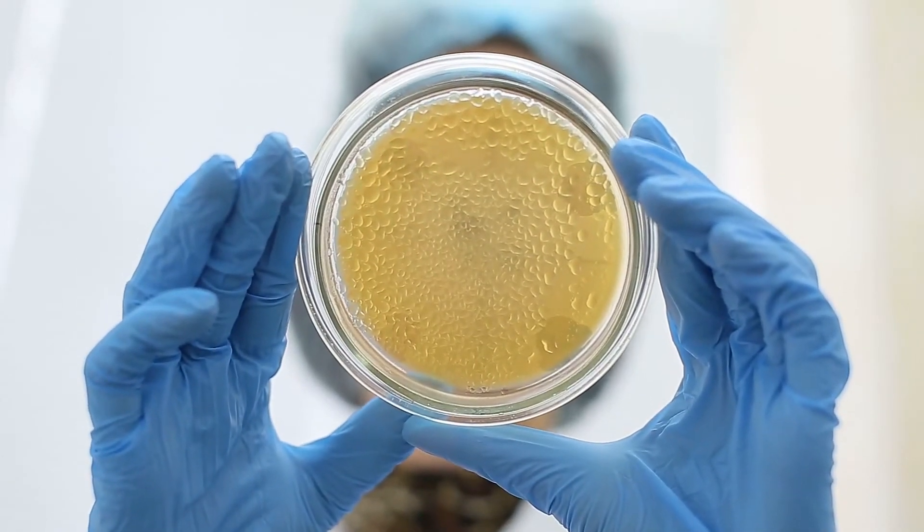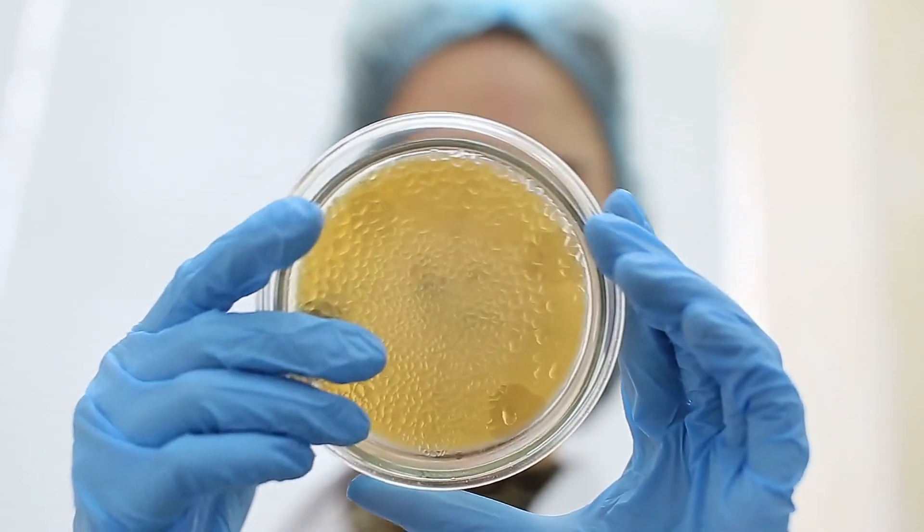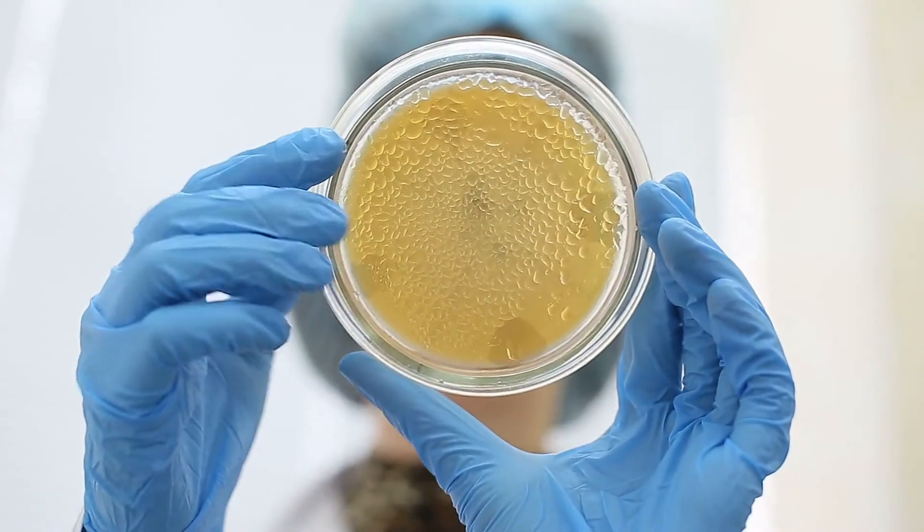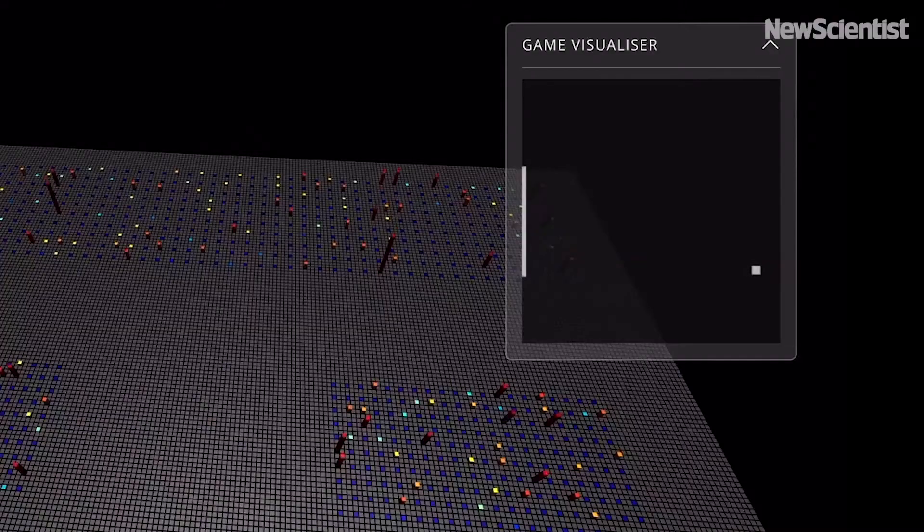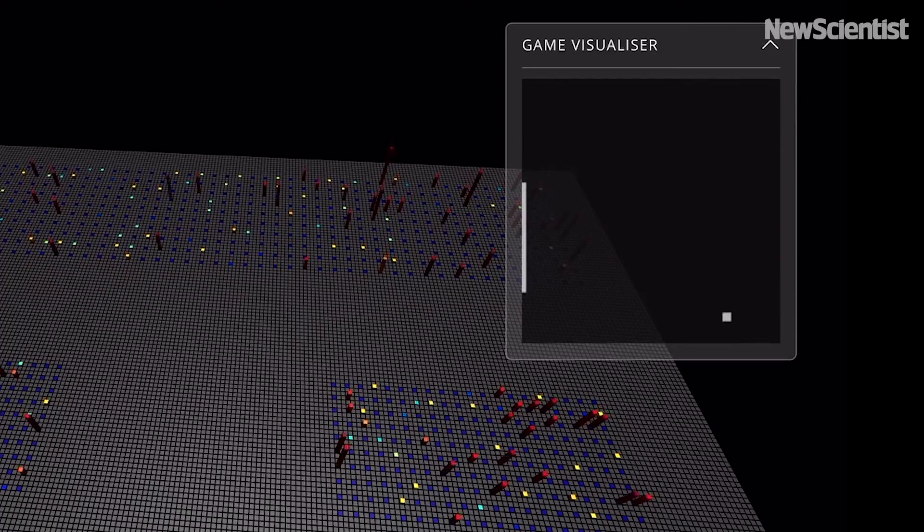The team created mini-brains consisting of up to 1 million living human brain cells in a Petri dish. Then they attempted to teach it to play Pong by sending a signal to either the right or left array to indicate where the ball is. The neurons from the brain cells send signals back to move the paddle.